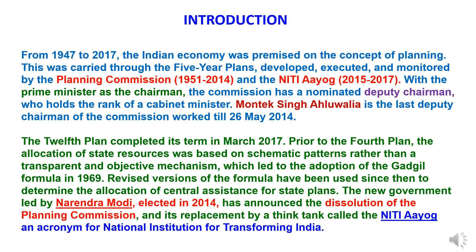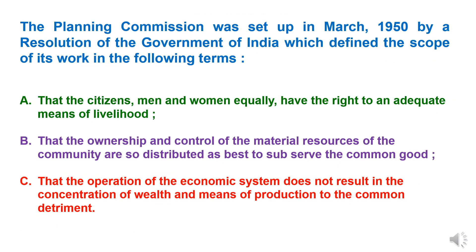The Planning Commission was replaced by a think tank called the NITI Aayog, which stands for National Institution for Transforming India. The Planning Commission was set up in March 1950 by a resolution of the Government of India, which defined the scope of its work: that citizens, men and women equally, have the right to an adequate means of livelihood; that the ownership and control of material resources of the community are distributed to best serve the common good; and that the operation of the economic system does not result in the concentration of wealth to the common detriment — meaning there should be no harm.